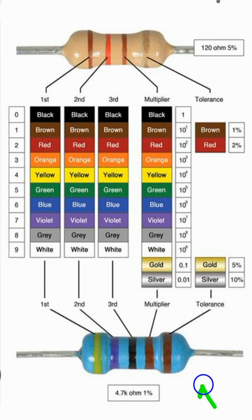Similarly, let's look at this resistor — it has 5 different color bands: 1, 2, 3, 4, and 5. We start from the left and determine its value. The first color is yellow, the second color is violet, the third color is black, the fourth color is brown, and the fifth color is also brown. Yellow has a value of 4 from the first column, and violet from the second column has a value of 7.